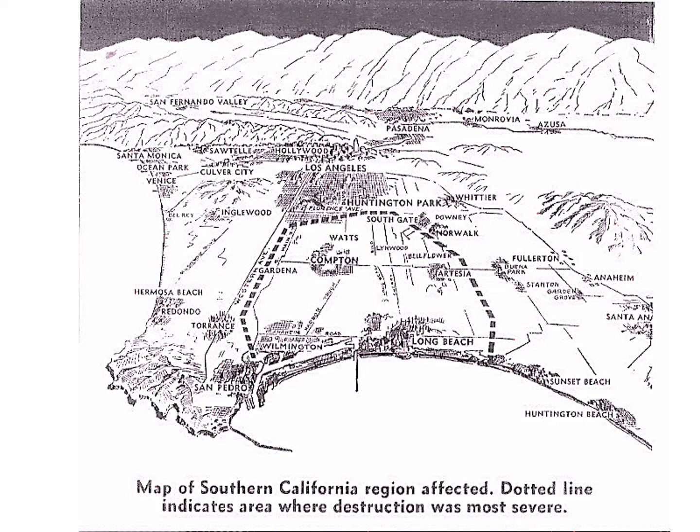Many of the towns in this earthquake zone are built on an alluvial plain. Thus, the soft soil, gravel, and other material facilitated severe earth movement, causing damage to many of the unreinforced brick buildings.